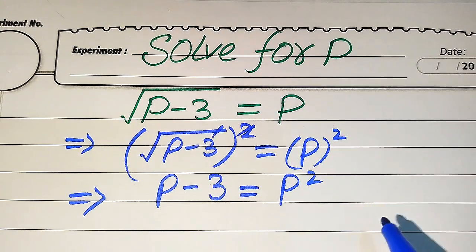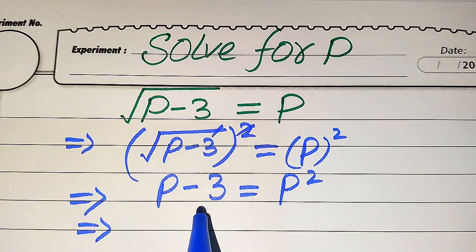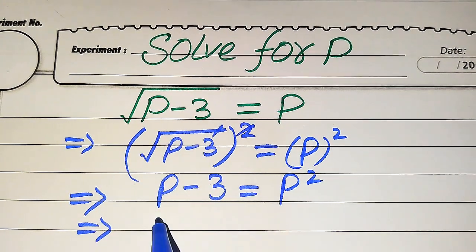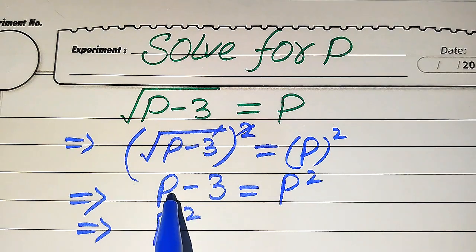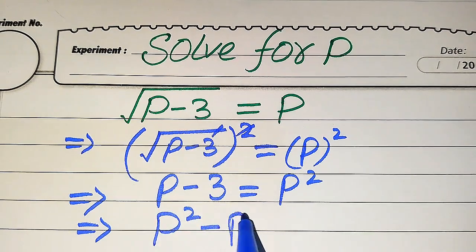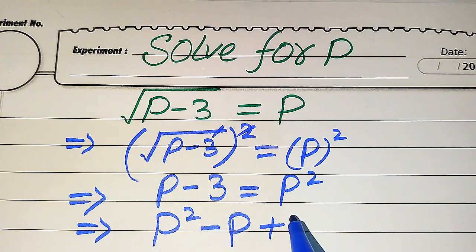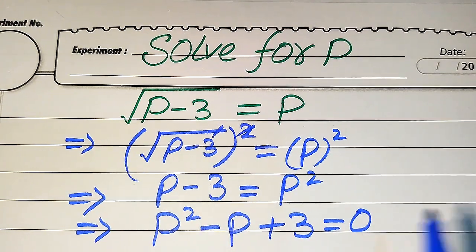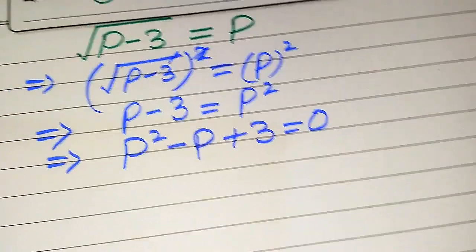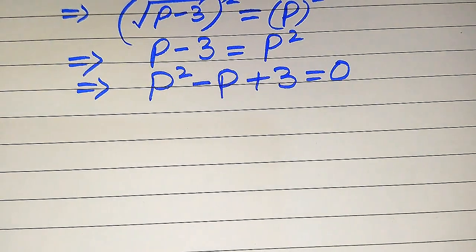Now we move both terms from the left hand side to the right hand side. P² stays on the right; when we move +P to the right it becomes −P, and when we move −3 to the right it becomes +3. The whole equation becomes P² − P + 3 = 0.